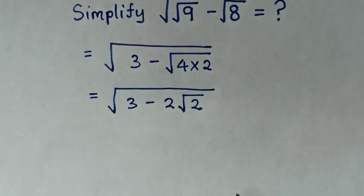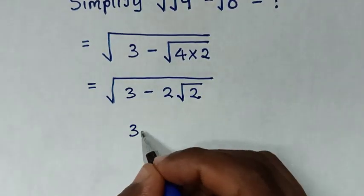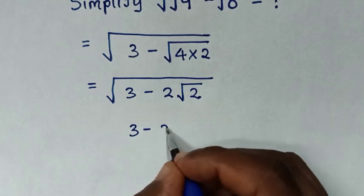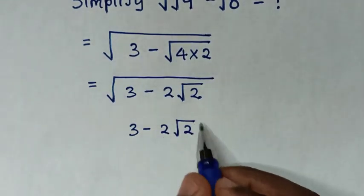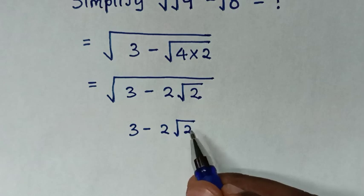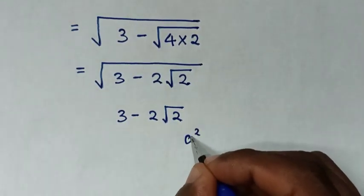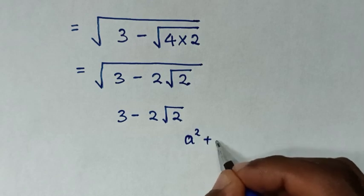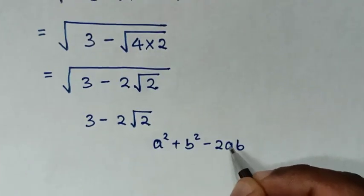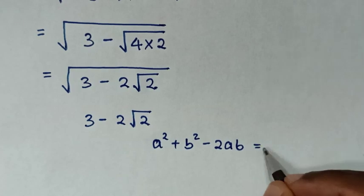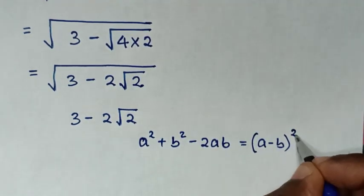In the next step, from this expression under the square root — which is 3 minus 2 square root of 2 — we'll express this in the form of the algebraic rule: a squared plus b squared minus 2ab, which is equal to (a minus b) squared.